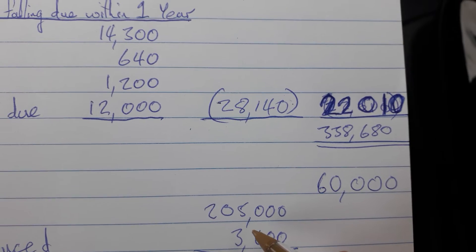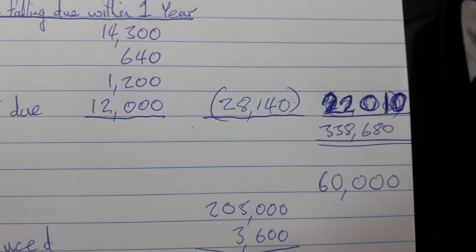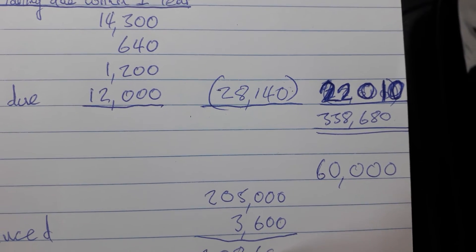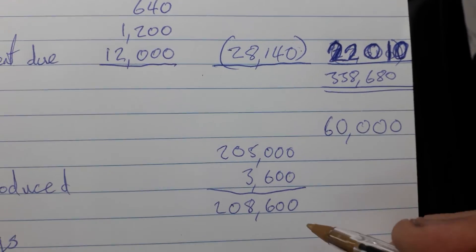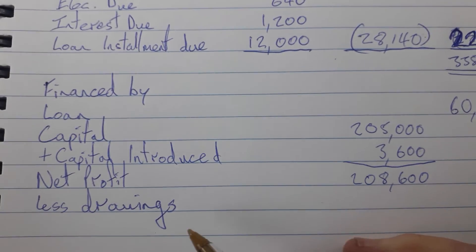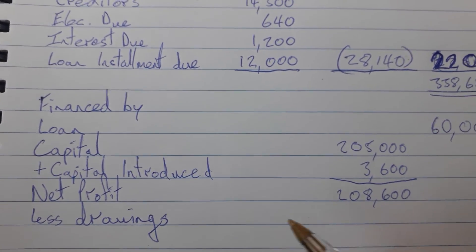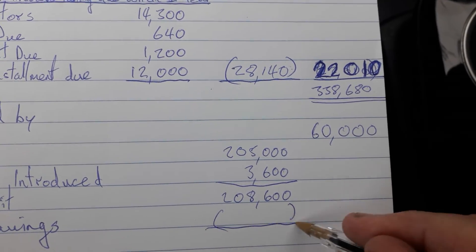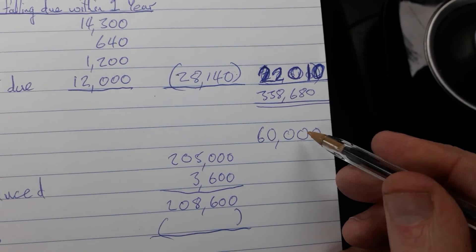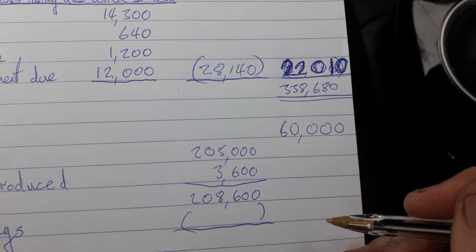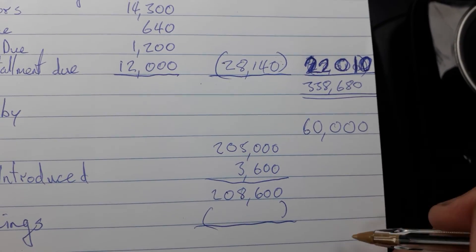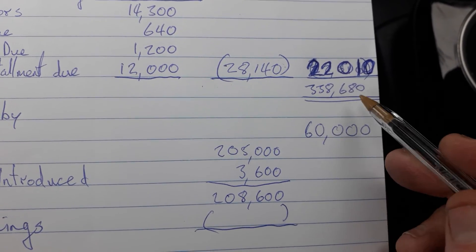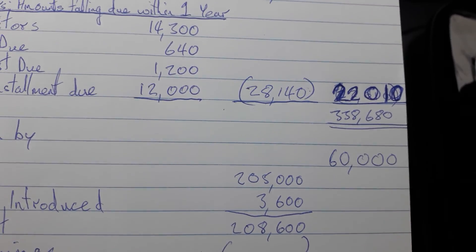Adding those together, we get a figure of 208,600. In the next video, we're going to work out the drawings, which will be subtracted from that before adding to our 60,000 over here, and hopefully we'll get a total which is the same as up here.